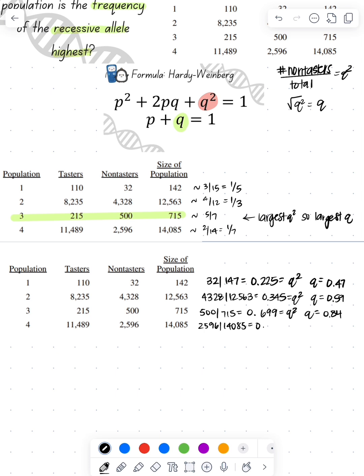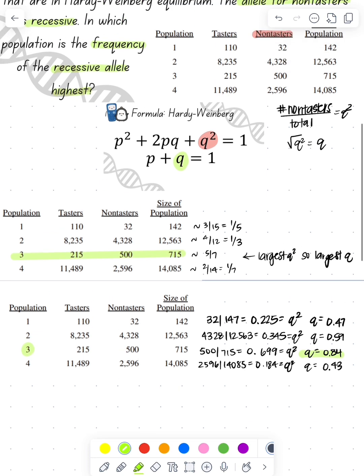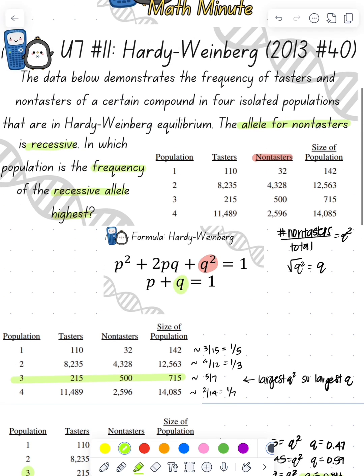So then I do 2,596 divided by 14,085, and that gives me 0.184, which is my Q squared. Then I take the square root, so that'll be 0.43. So we can see that our largest Q value is the one from population three at 0.84.